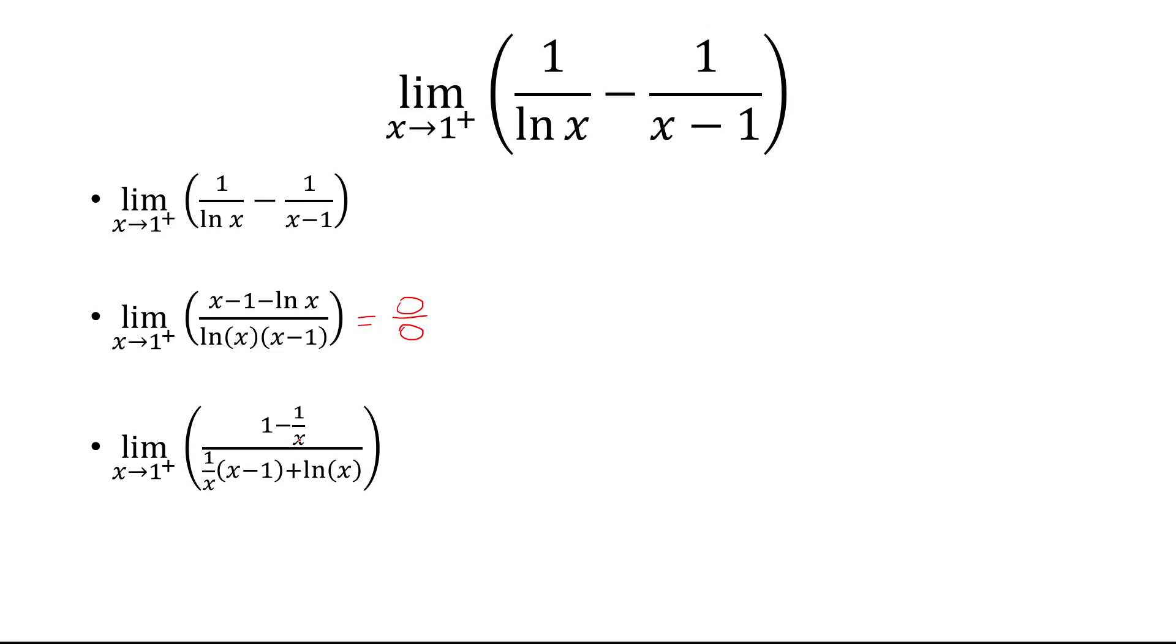Now, I don't like that I have an x in the denominator, so I'm going to multiply the top and the bottom by x. And that should take care of these x's. So that gives us x minus 1 over x minus 1 plus x ln of x.